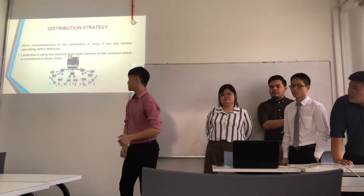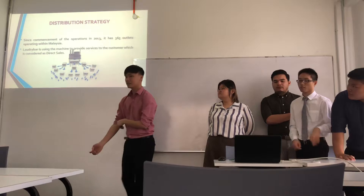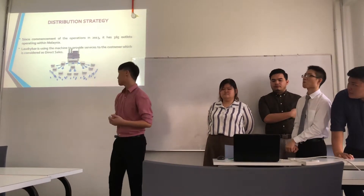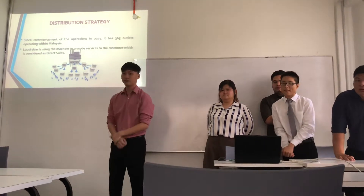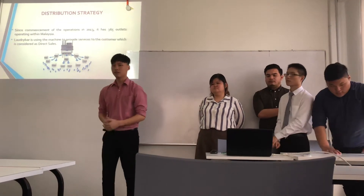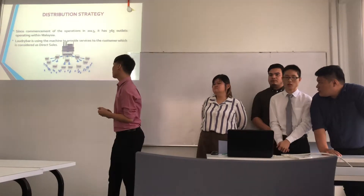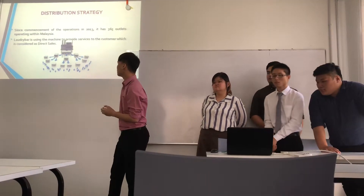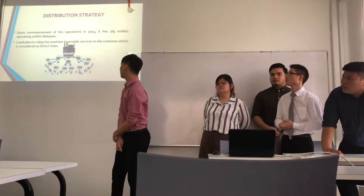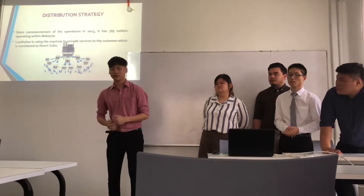For the distribution strategy, since Laundry Bar started operating in Malaysia, today there are more than 365 outlets available throughout Malaysia, but most are in West Malaysia. There are only two outlets in Sabah. Laundry Bar uses their washing machines to provide service to customers, which is considered a type of direct service.